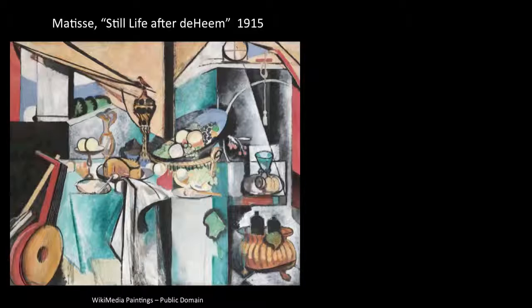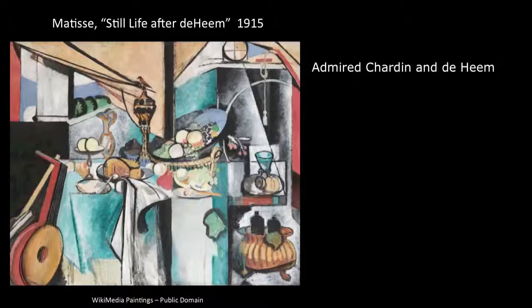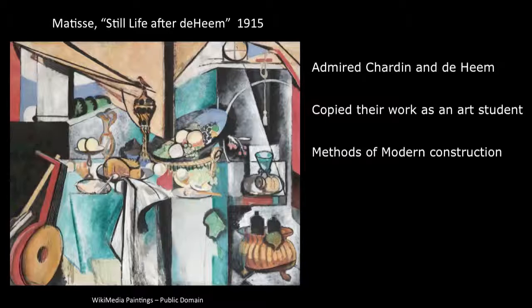This painting is by Matisse, called Still Life after de Heem's La Desserte from 1915, which belongs to the modern period of art. Matisse admired the Baroque paintings of Chardin and de Heem, which he studied when he visited the Louvre in Paris, and made small copies of their work when he was an art student. This still life is a version of de Heem's composition, but is based on what Matisse called the methods of modern construction, influenced by Cézanne and Cubism. Matisse is quoted as saying: in modern art, it is undoubtedly to Cézanne that I owe the most.